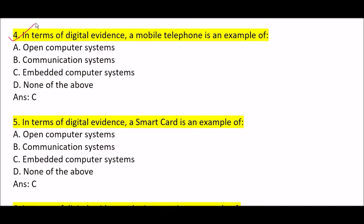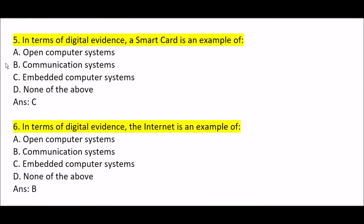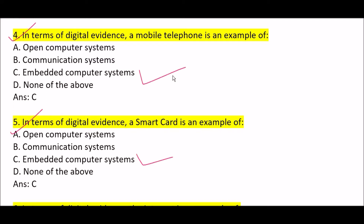Next question: in terms of digital evidence, a mobile telephone is an example of — correct answer is Option C, embedded computer systems. Mobile telephone is an example of embedded computer systems. Similarly, in terms of digital evidence, a smart card is also an example of embedded computer systems. Both mobile telephone and smart card are examples of embedded computer systems.